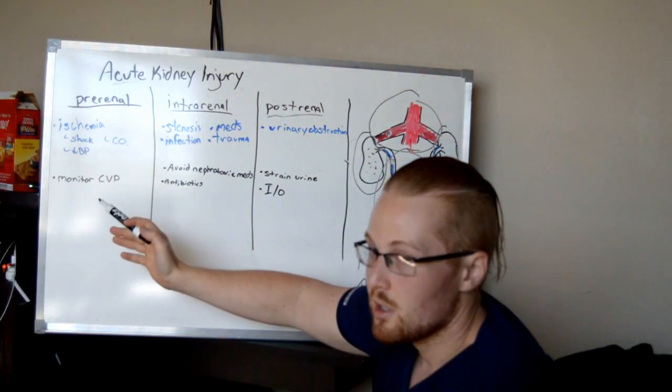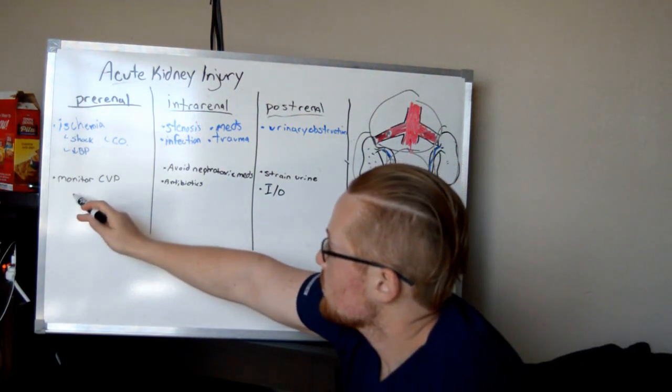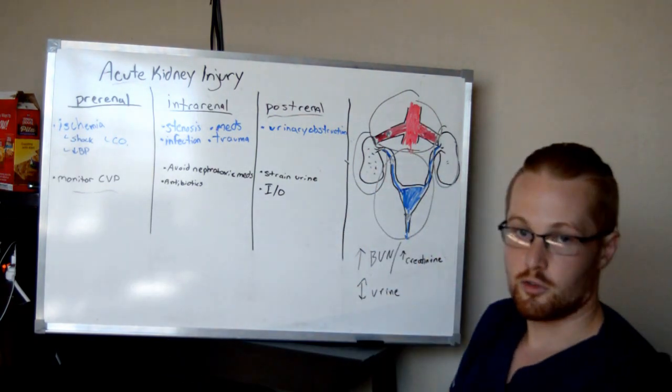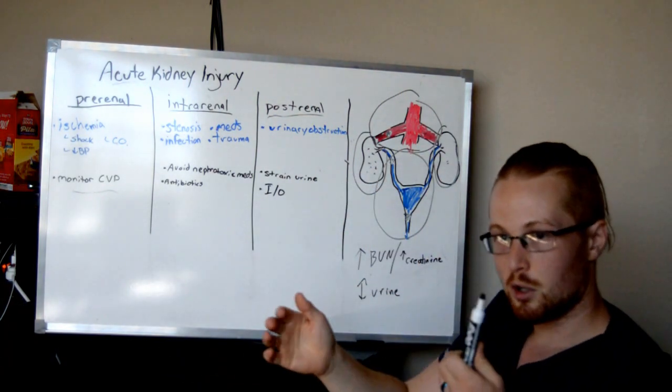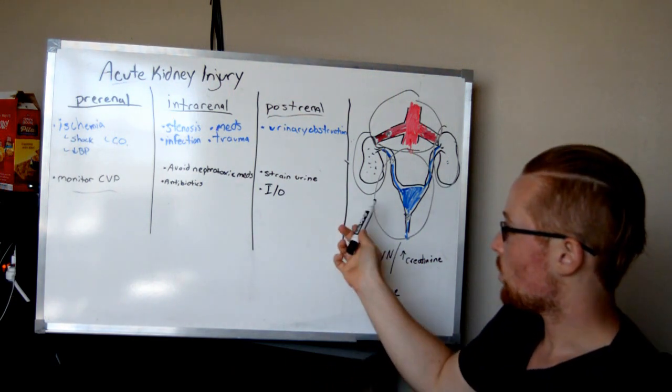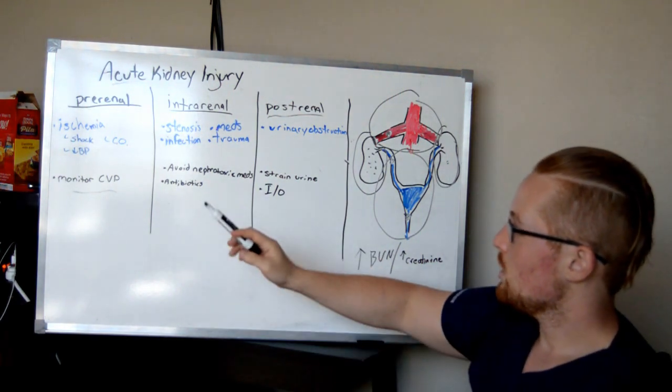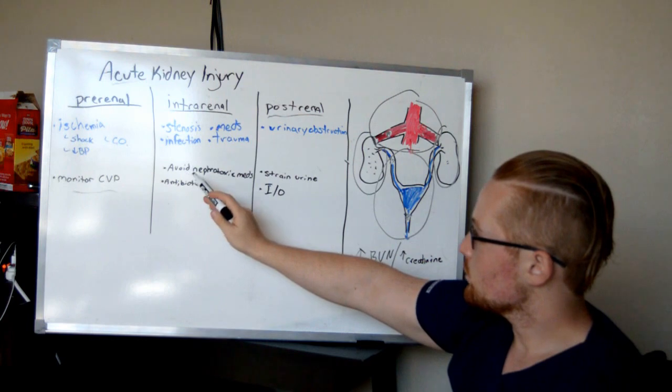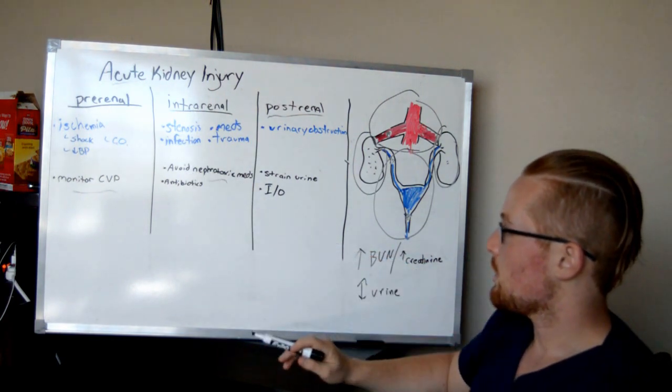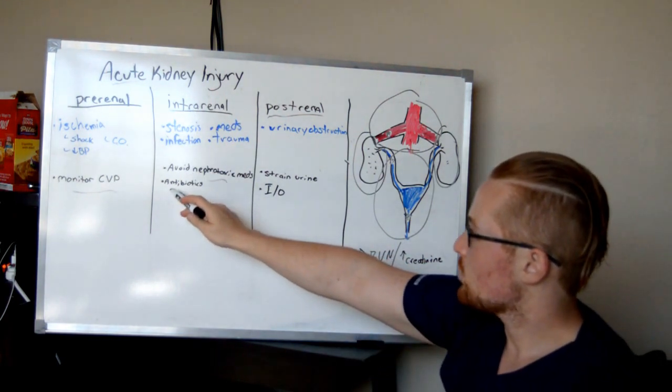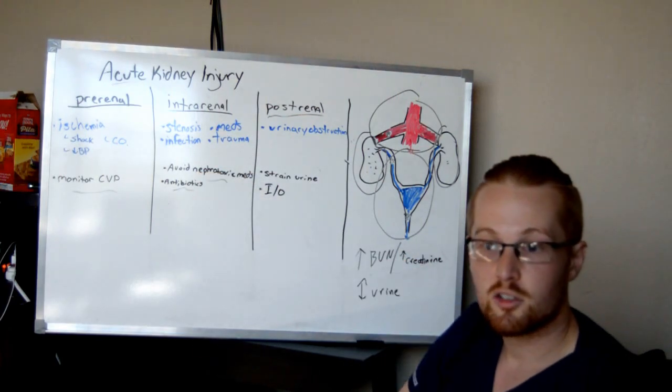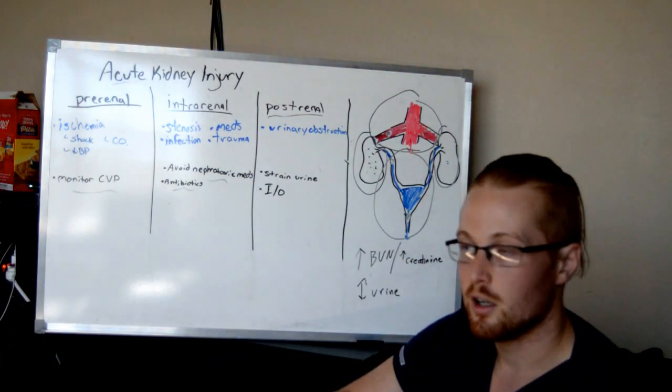So, some nursing interventions for these. If it's something to do with prerenal, you want to monitor your CVP, central venous pressure. This is a measure of the blood pressure to see how much perfusion is going through the organs. That's one thing you want to do. If intrarenal, you want to be sure to watch for nephrotoxic medications. You want to make sure you educate patients about taking their antibiotics to the complete extent of the antibiotics.